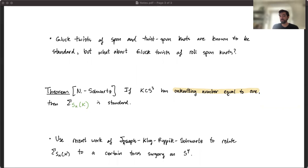We use some recent work of Jason Joseph, Mike Klug, Ben Rubeck, and Hannah Schwartz to relate this surgery to a torus surgery, which you also know is standard. But it leaves open a lot of interesting questions about higher knotting numbers or just roll-spins in general.